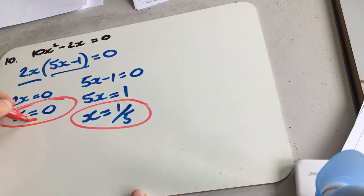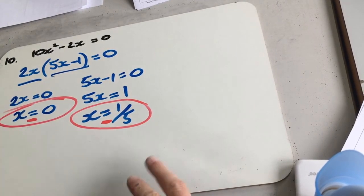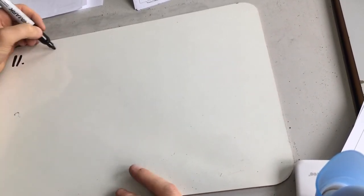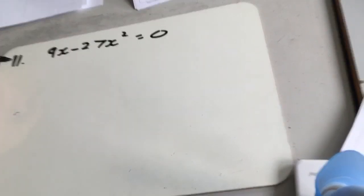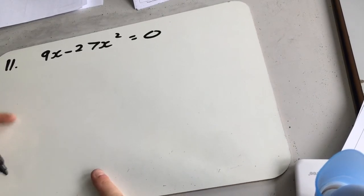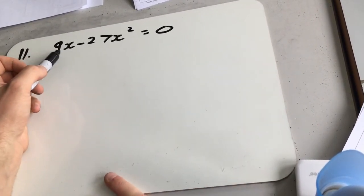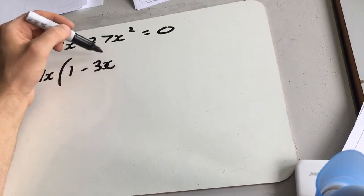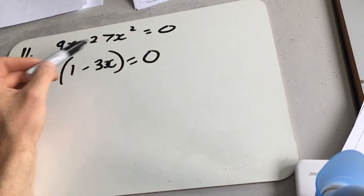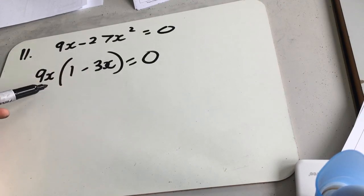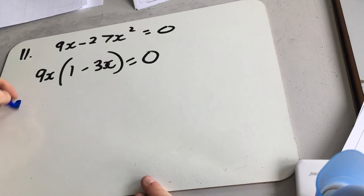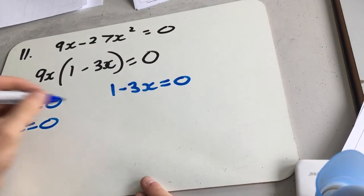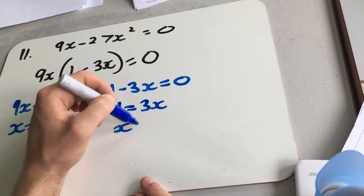Question 11: 9x minus 27x squared equals 0. Looking for common factors — we can find a common factor of 9 in both, and of x in both. So taking out 9x gives 9x(1 minus 3x) equals 0. Either 9x equals 0, giving x equals 0, or 1 minus 3x equals 0, giving 1 equals 3x, so x equals one third.